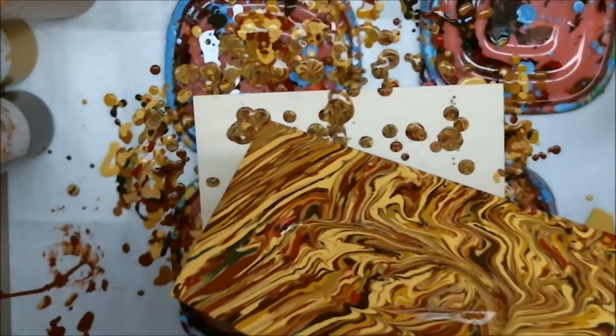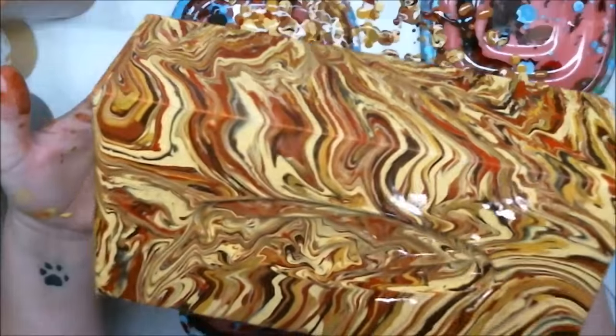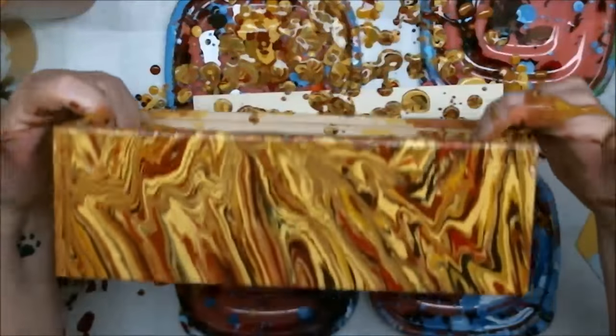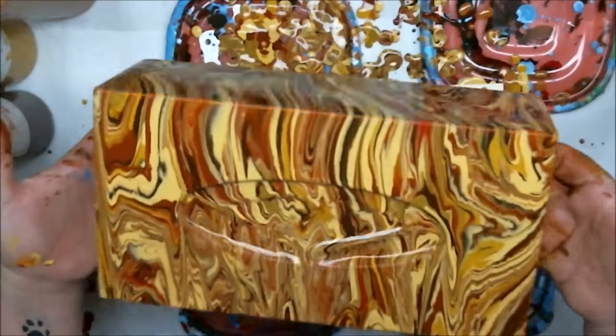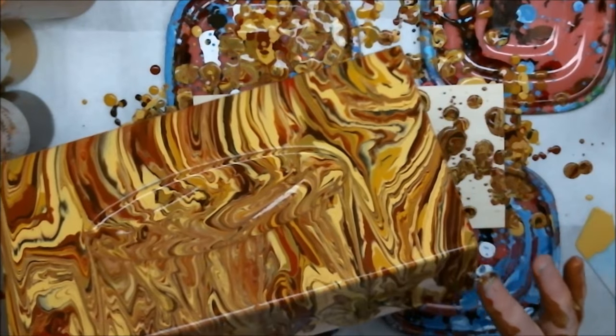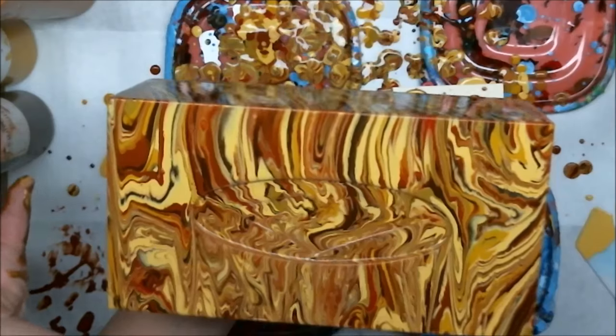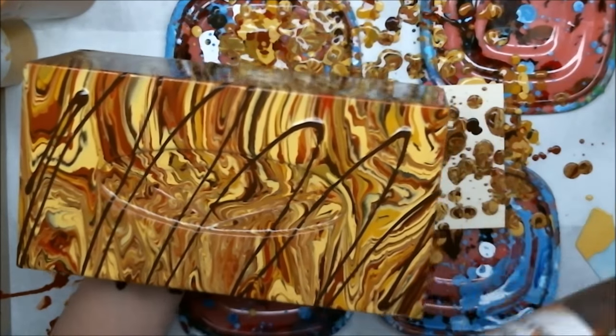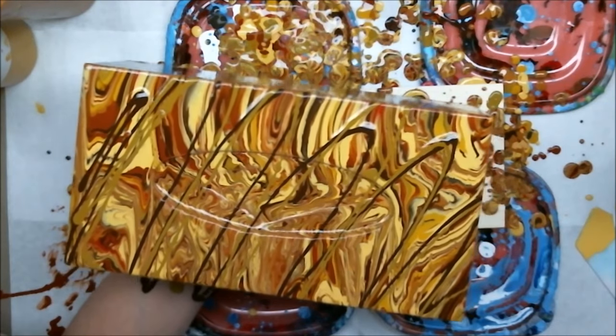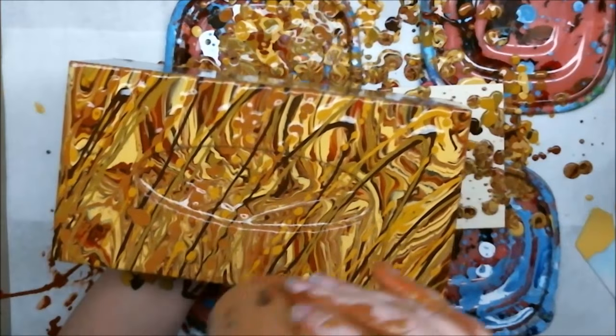Alright, so that side is done. That side's mostly done. This side needs definitely some more paint. Alright. I'm going to hold it with one hand and add some stripes with the other hand. This is a very messy process. I really like the way it's turning out though. I hope it dries really cool.